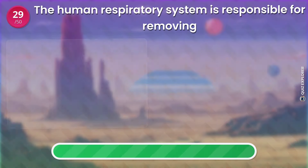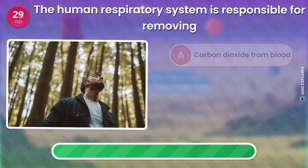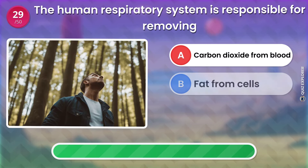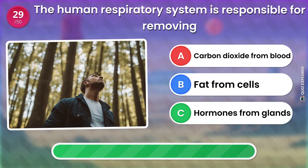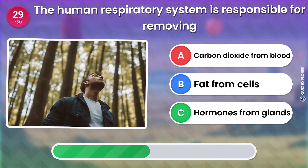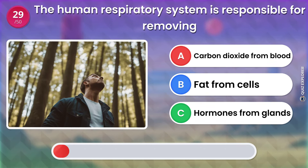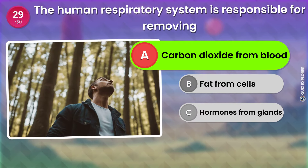The human respiratory system is responsible for removing... Carbon dioxide from blood. Fat from cells. Hormones from glands. The answer is: Carbon dioxide from blood.